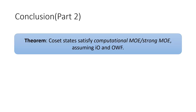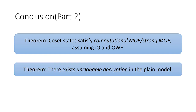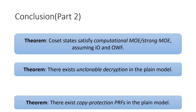To conclude the second part of the work: first, we show that coset states satisfy computational MOE and strong computational MOE, assuming IO and one-way functions. Then we show that unclonable decryption exists in the plain model. And finally, we show that copy protection for PRFs exists in the plain model, based on unclonable decryption using an IO trick called the hidden trigger technique.